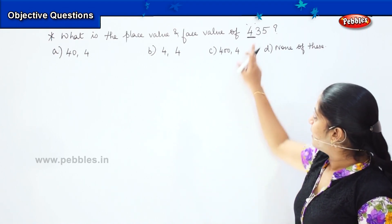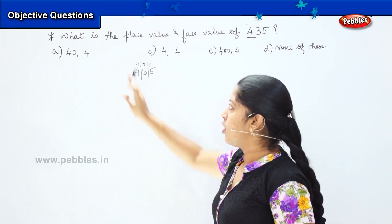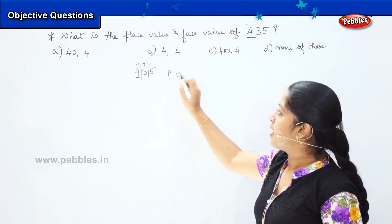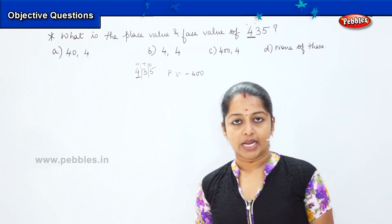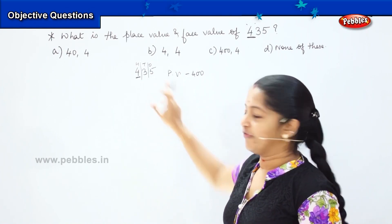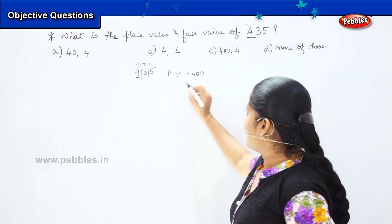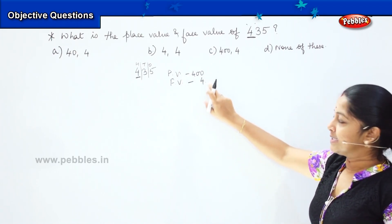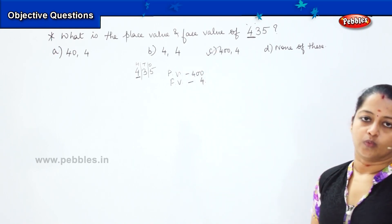As I told you earlier, the number is 435. If you write it as H, T, O and divide it into those columns, 4 is in the hundreds column. So my place value will be 400. And as I told you, the face value of the number will not change — it will remain as it is. So if it is being asked for 4, it will remain 4. So the face value will be exactly the number which we have to find. In this case it is 4, so my face value will be 4. So the answer is option C, where my place value is 400 and my face value is 4. Is it clear, children?